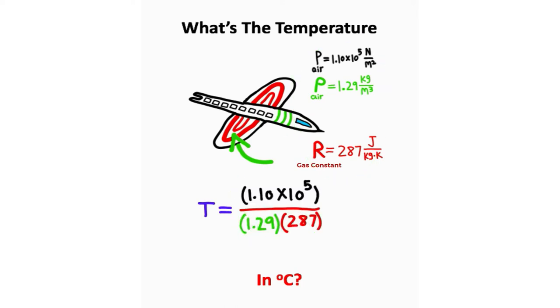You should end up with something that looks like this. Now our air pressure divided by the product of our density and gas constant, that's going to give you 297 degrees Kelvin. But notice here we get an answer in Kelvin, and we're looking for an answer in degrees Celsius.